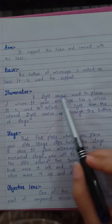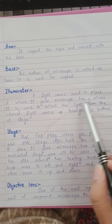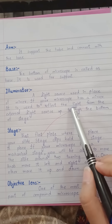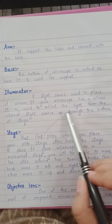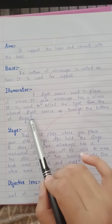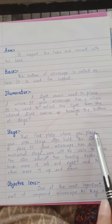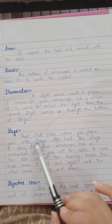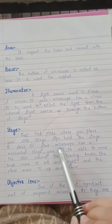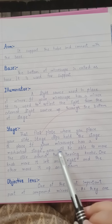The illuminator is a light source used in place of a mirror. If your microscope has a mirror, it is used to deflect light from an external source up through the bottom of the stage. The stage is the flat piece where you place your slide.